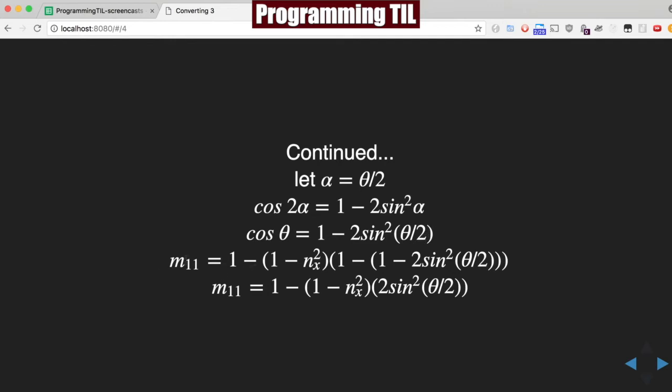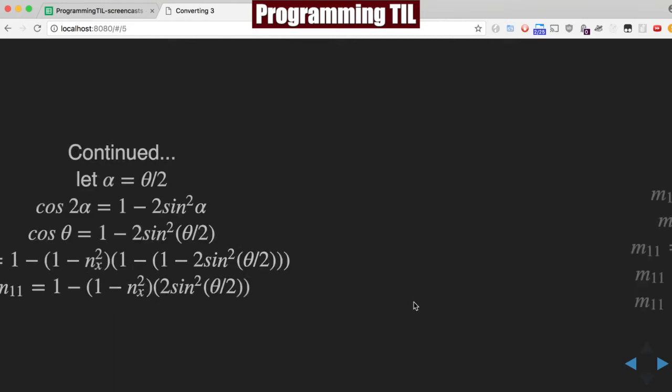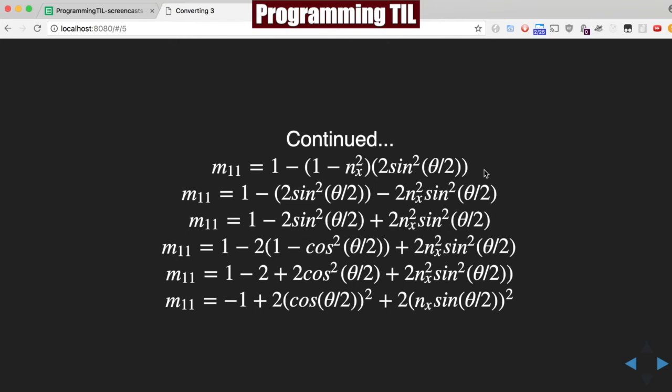That allows us to substitute that back into the M11 formula and continue to simplify. We're going to expand out here and also use the trig identity of 1 minus cosine squared theta equals sine squared theta over 2. This is all just general trigonometry and expansion. You don't really need to know how to do this - you can just use the formula at the end of the episode. But it's good practice if you want to look at how all of this works and is derived.